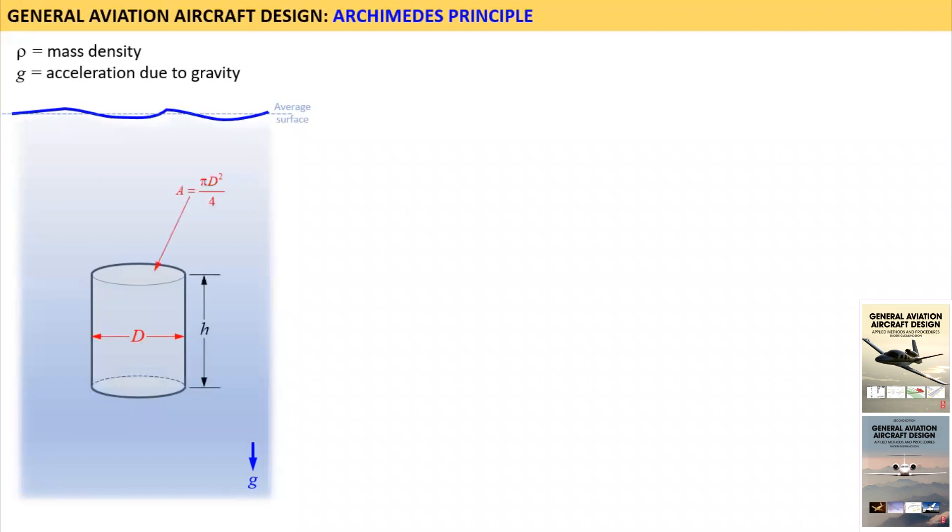For one, the surface area of the top and bottom surfaces is given by the simple expression shown in the diagram. Area A is equal to pi times d squared divided by 4. A massless cylinder is also a simplification that will be addressed at the end of the video.